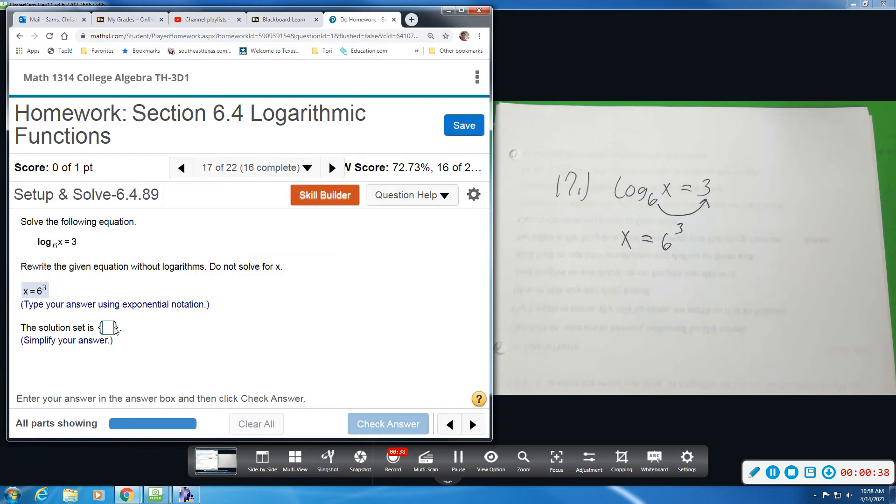Okay, part 2 wants to know the solution, so if you raise 6 to the third power, you get 216. 6 times 6 times 6, you get 216.